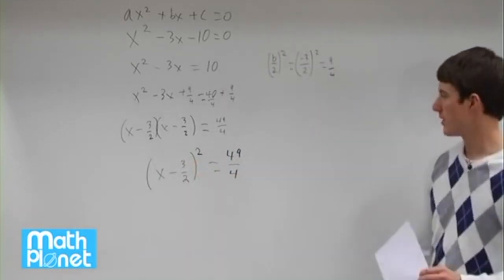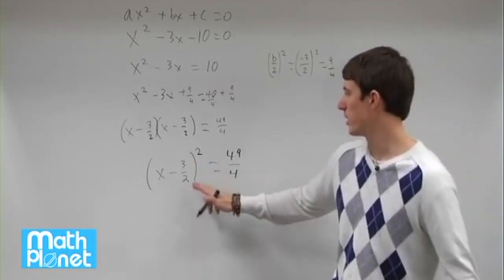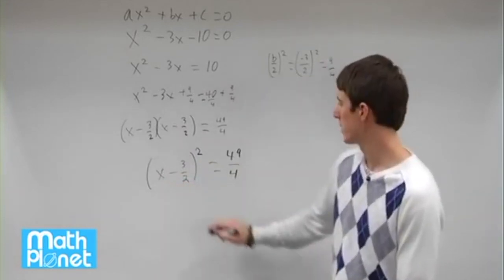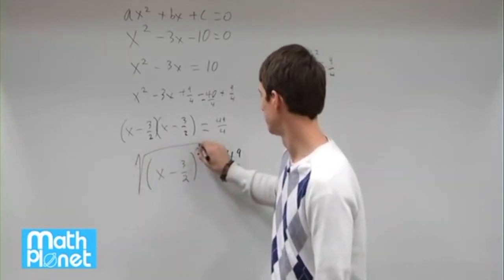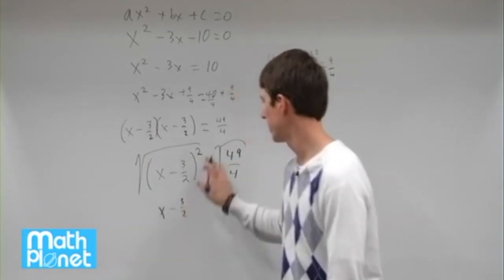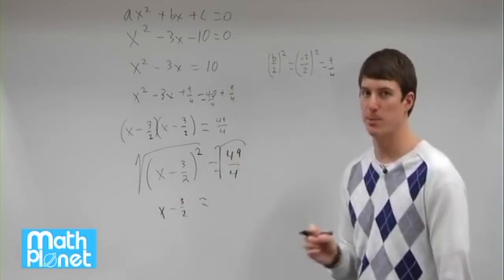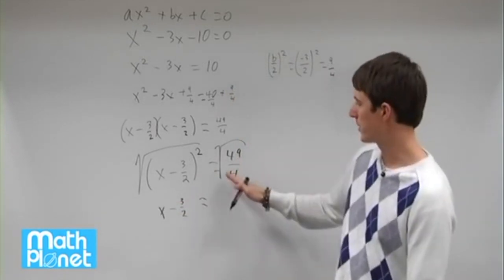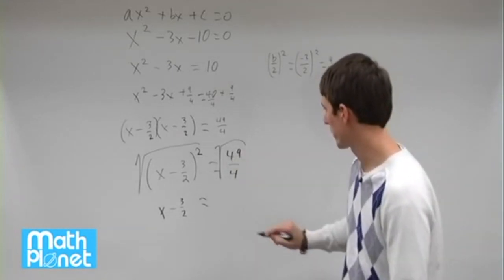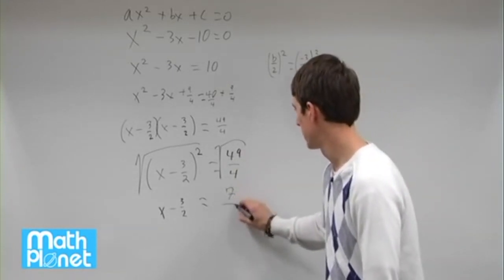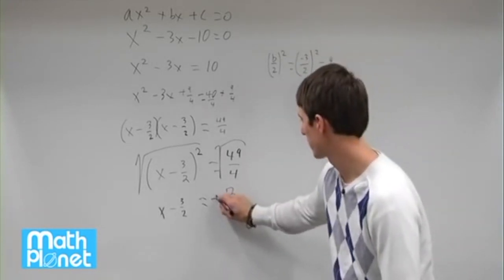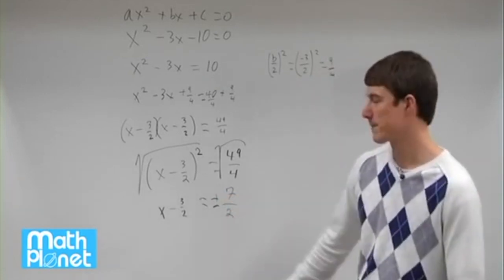So we're almost done. Next thing we need to do is basically solve. We have a square here which means we need to take the square root of both sides. We're digging out that x still. Take the square root, and that gives us x - 3/2 here. The square root of this is going to give us a plus and a minus number, and this is how we get our two answers from this quadratic equation. So square root of 49 is 7, square root of 2 is 2, and remember don't forget your plus or minus here, so you have two answers.